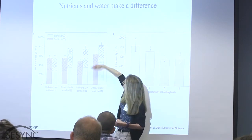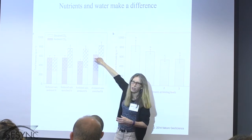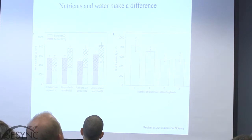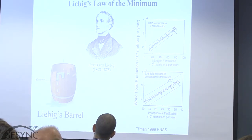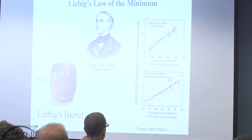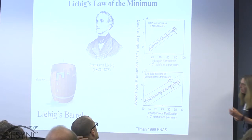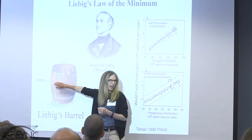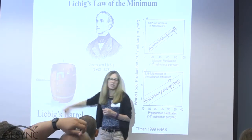When both resources were increased in availability, they got a little bump — although it's a little misleading because their control site also got a little bump. This gets into an important concept in ecosystem ecology: Liebig's Law of the Minimum. Liebig's Law states that it's not the total amount of resources that matter, but the availability of the most limiting resource. You can think of Liebig's barrel — the lowest stave controls how full the barrel can be. It's that lowest stave where water begins to leak out.